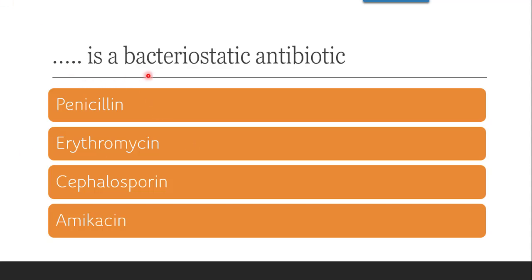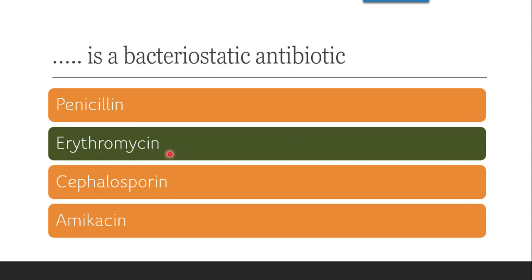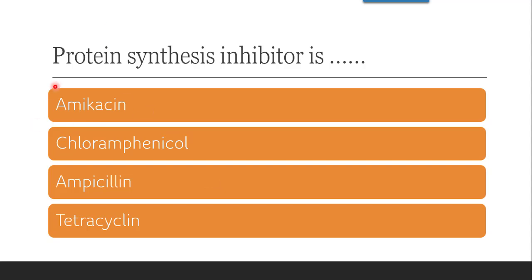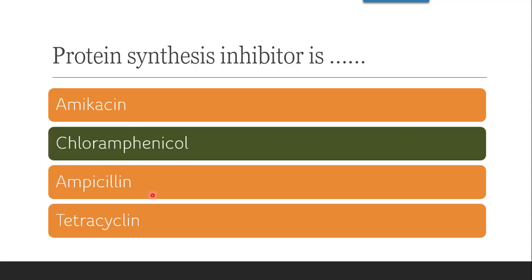The next question is: which is a bacteriostatic antibiotic? The macrolide antibiotic is a static antibiotic, so the correct answer is erythromycin, which is a macrolide antibiotic. The next question is: which is a protein synthesis inhibitor — amikacin, chloramphenicol, ampicillin, or tetracycline? According to the mechanism of action, the correct answer is chloramphenicol, which belongs to the miscellaneous class.